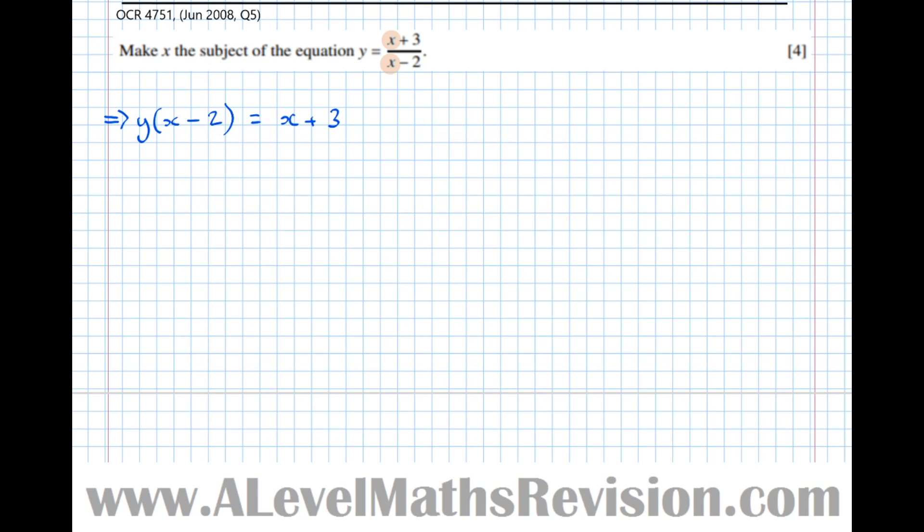Now I've got all the X's on the numerator, so I need to start gathering them up on the same side. If I multiply out the brackets: YX - 2Y equals X + 3. I need to get all of these X's onto the same side. If I want to get this X over to that side, it's currently a positive X, I subtract it. So this implies YX - 2Y - X equals 3. Now this minus 2Y doesn't belong because it's not got X's in it. To undo the minus 2Y, I'm going to add 2Y. So this implies YX - X equals 3 + 2Y.